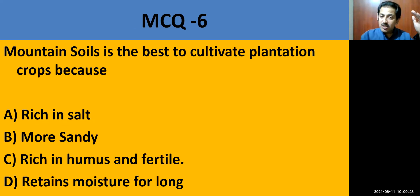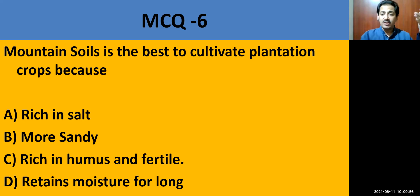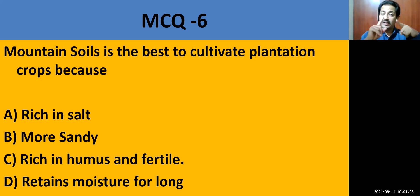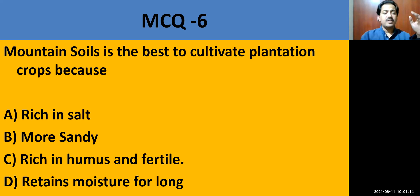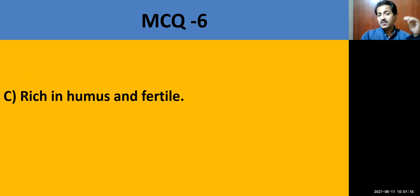MCQ question number 6: Mountain soil is the best to cultivate plantation crops because — it is rich in salt, more sandy, rich in humus and fertile, or retains moisture. The correct answer is rich in humus and fertile.